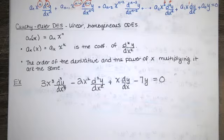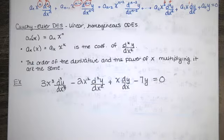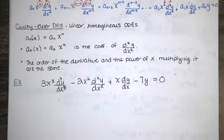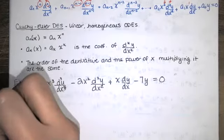Cauchy-Euler differential equations are solved in a very similar method to the method we used when solving constant-coefficient differential equations. If the equation was homogeneous, linear, and had constant coefficients, we let y equal e to the mx. That turned out to be exactly what we needed so that the left-hand side became a sum of constants times exponential functions, and for the right choice of m, those constants would equal 0, giving us the 0 on the right-hand side.